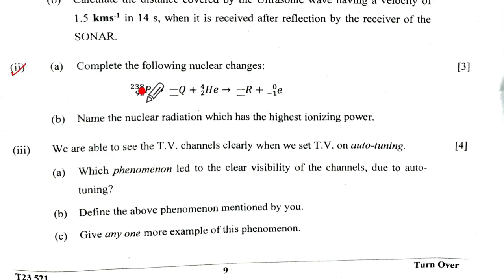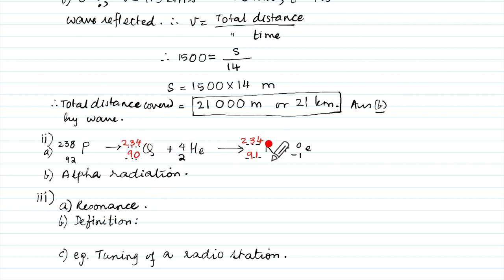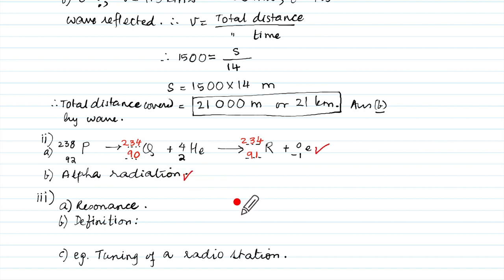Question 7, second subpart: Complete the nuclear decay chain. Uranium-238 (atomic number 92) emits an alpha particle (helium-4), giving mass number 234 and atomic number 90 — that is element Q. Element Q then emits a beta particle, so mass number stays 234 but atomic number increases by 1 to 91 — giving element R. Part B: Alpha radiation has the highest ionizing power.